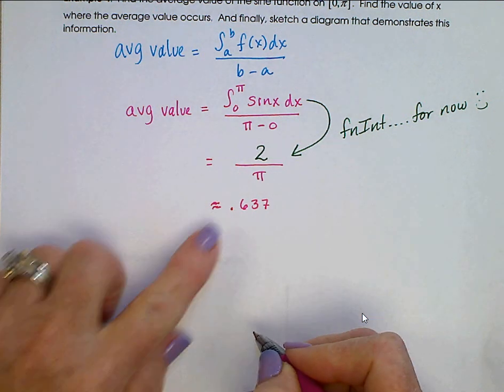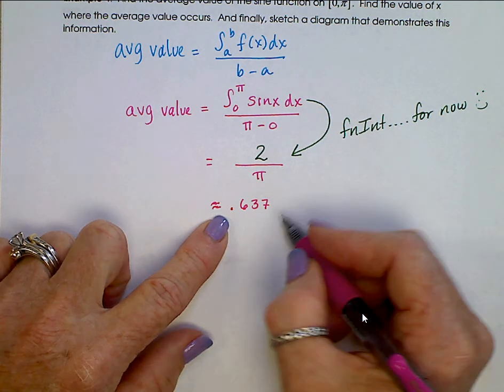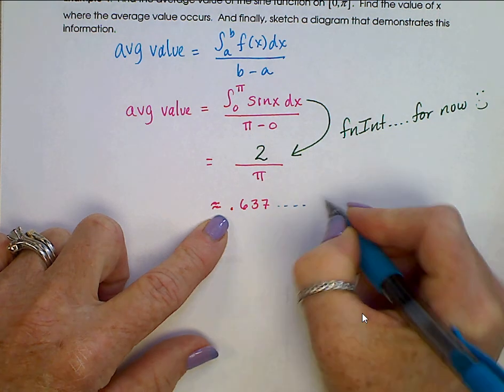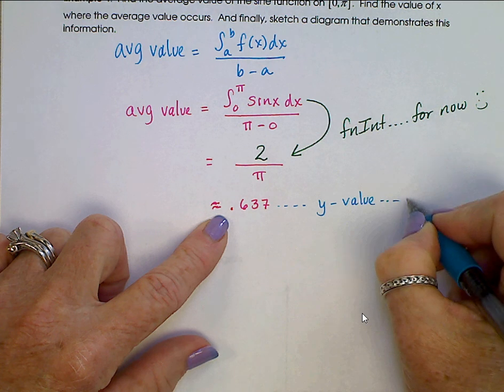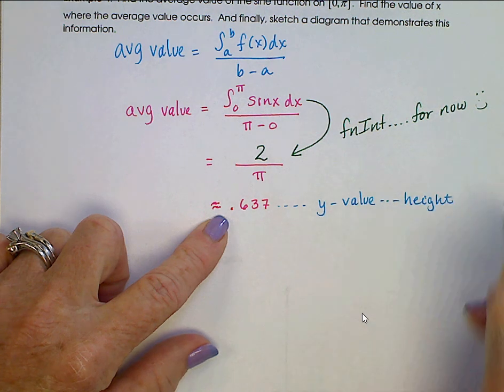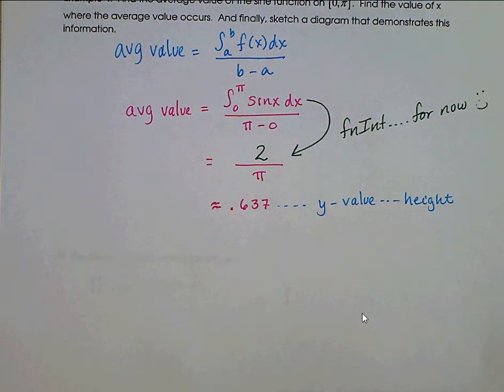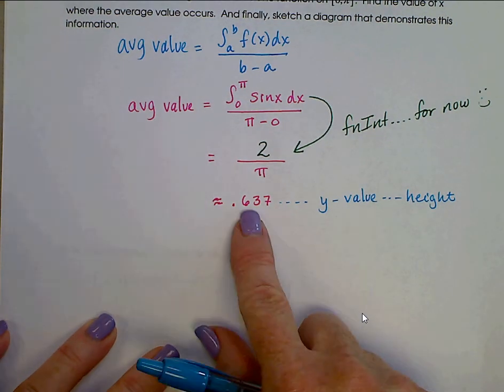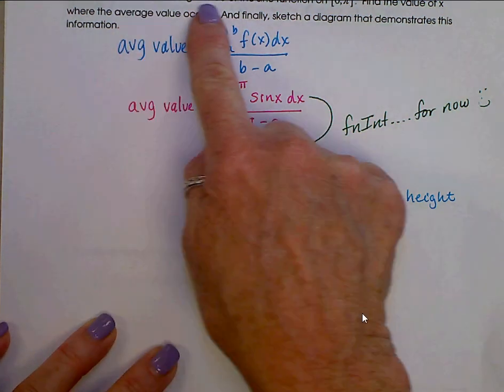That is the average value. Average value is a y value. It's a height. It is if you could add up all of the heights on the sine curve between 0 and pi and divide by that infinite number of heights, what height would you get? What average would you get? And it would be 0.637. So first part, find the average value of the sine function. Got it.